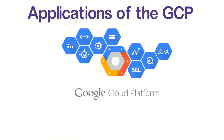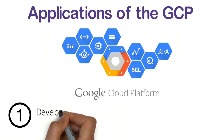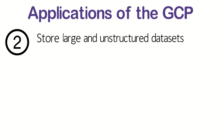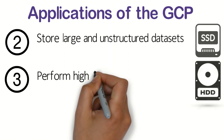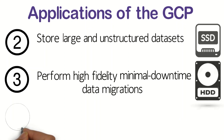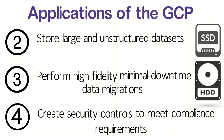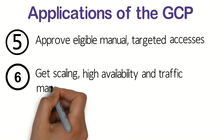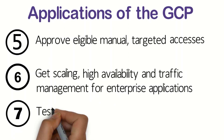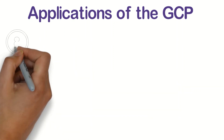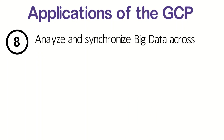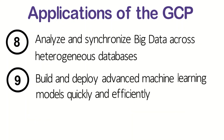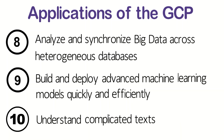Applications of GCP. Some of the major applications of Google Cloud Platform are: develop feature-rich and cross-platform applications for mobile and web; store large and unstructured data sets in SSD and HDD storage; perform high-fidelity, minimal downtime data migrations; create security controls to meet compliance requirements; approve eligible manual-targeted accesses; get scaling, high availability and traffic management for enterprise applications; test mobile applications using physical and virtual devices; analyze and synchronize big data across heterogeneous databases; build and deploy advanced machine learning models quickly and efficiently; understand complicated text and images for high performance.